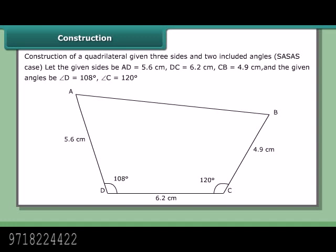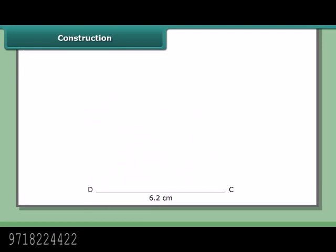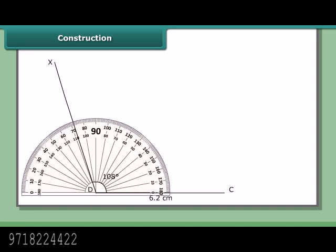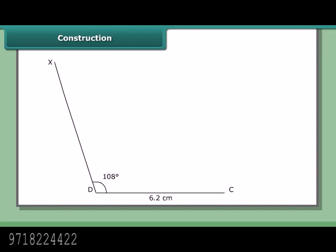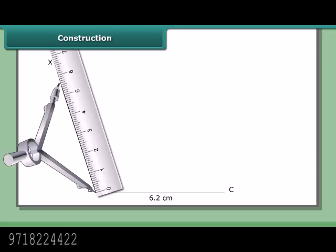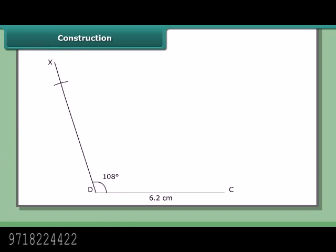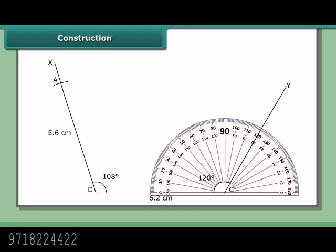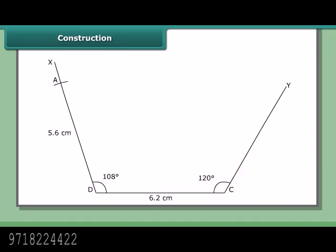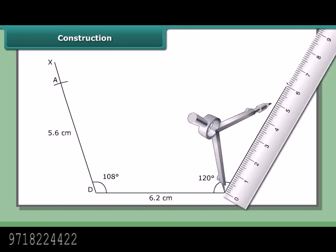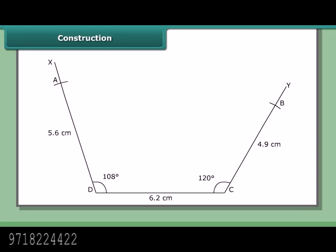In this case, we do not need to construct the quadrilateral by constructing two triangles. Draw DC = 6.2 cm. At D, draw angle CDX = 108°. With D as center and radius 5.6 cm, cut off DA = 5.6 cm on ray DX. At C, draw angle DCY = 120°. With C as center and radius 4.9 cm, cut off CB = 4.9 cm on ray CY. Join AB. Then ABCD is the required quadrilateral.